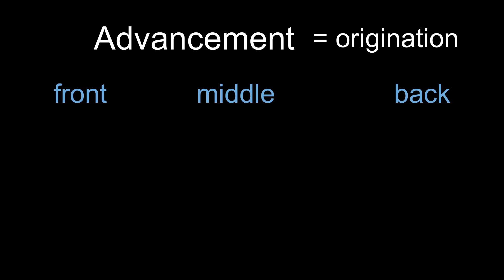Advancement. The other way to categorize the vowel sounds is to consider where the sound originates in the mouth. This measure is called advancement. Vowel sounds can originate at the front of the mouth, in the middle of the mouth, and in the back of the mouth. Vowels that occur in the front of the mouth are the following four: E, I, E, and AH. These four vowels are called the front vowels.